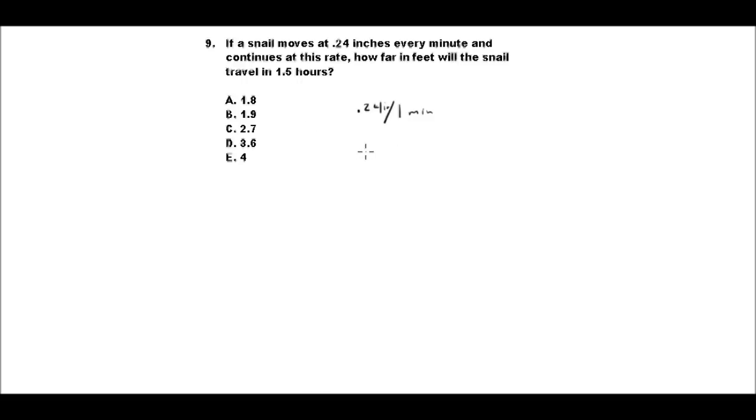So one hour is 60 minutes and 1.5 of an hour, because we have .5, is 30 minutes. So that's a total of 90 minutes.